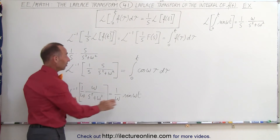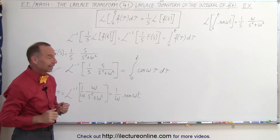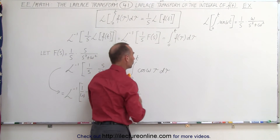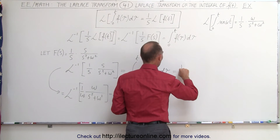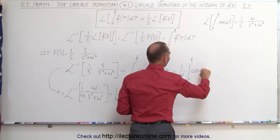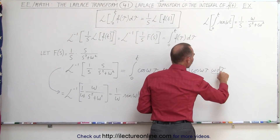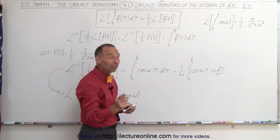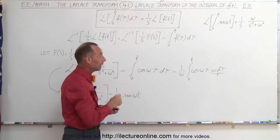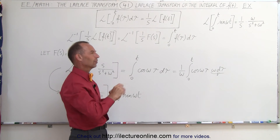Now that should be exactly the same as the integral we computed on the other side. Let's verify by going ahead and taking the integral of cosine of omega tau. To set up the proper differential, we write this as 1 over omega times the integral from 0 to t of cosine of omega tau times omega d tau. Since we introduced an omega inside, we also divide by omega outside.